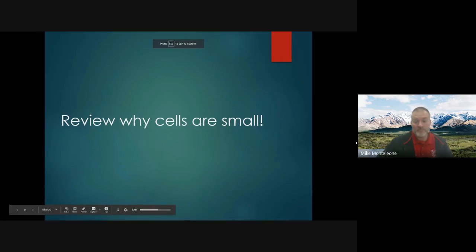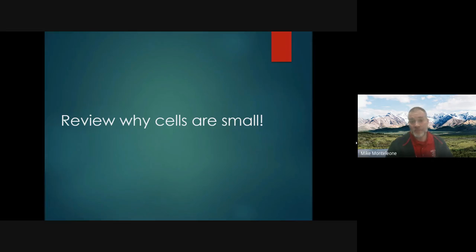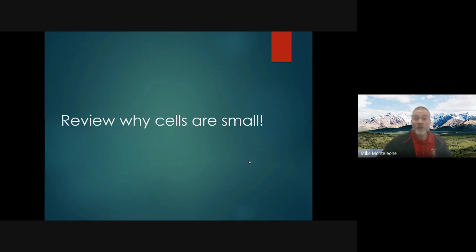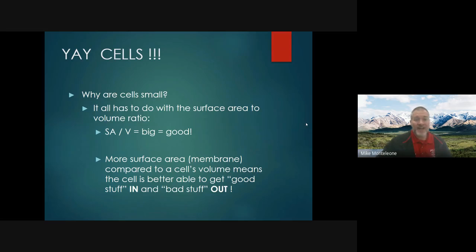We talked about cell reproduction — IP mat C — and when that goes haywire, something called cancer develops. These are the few little odds and ends here at the end of the chapter. We already talked in chapter three about why cells are small.